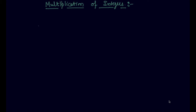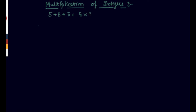I hope you guys are pretty clear about multiplication of positive integers. Let's say I have to add 5 plus 5 plus 5. I can write this as 5 added 3 times, which equals 15. So 5 into 3 is 15.